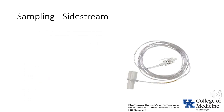Sidestream sampling is the technique that has the greatest amount of acceptance. The primary advantages and disadvantages are exactly the opposite of those of mainstream sampling. Because the sample has to be aspirated from the circuit to the measurement device, there is a significant time lag before results are available. On the other hand, the sampling device weighs next to nothing and so is not likely to result in displacement of the tracheal tube.